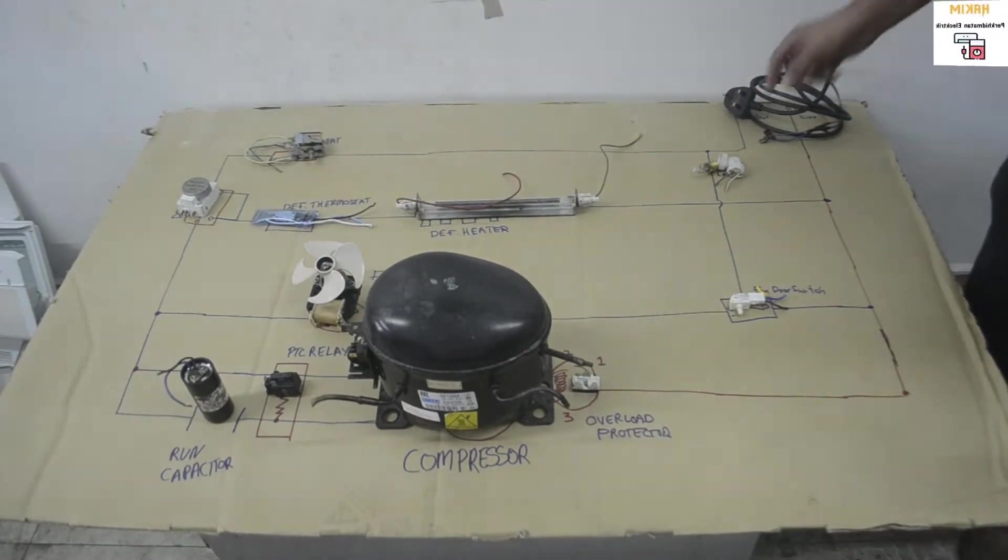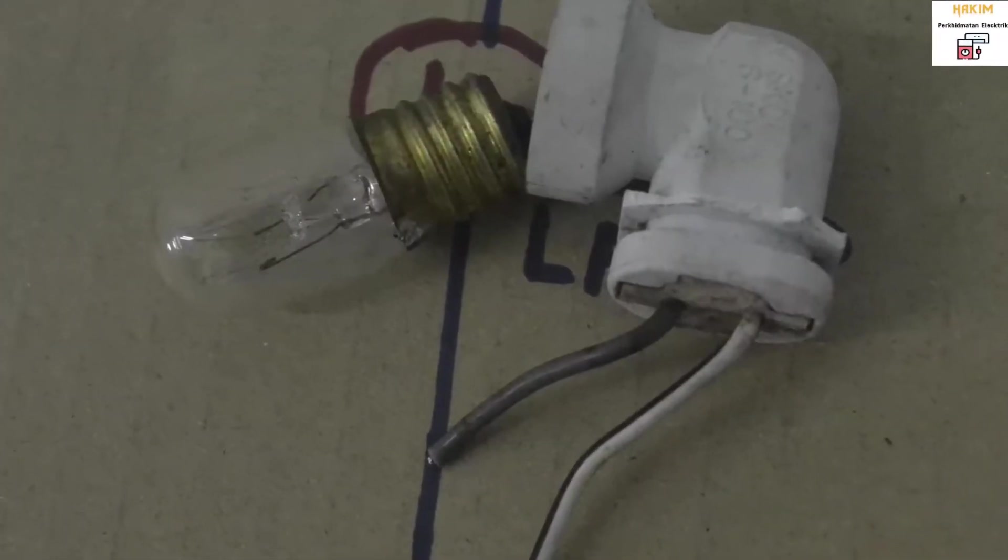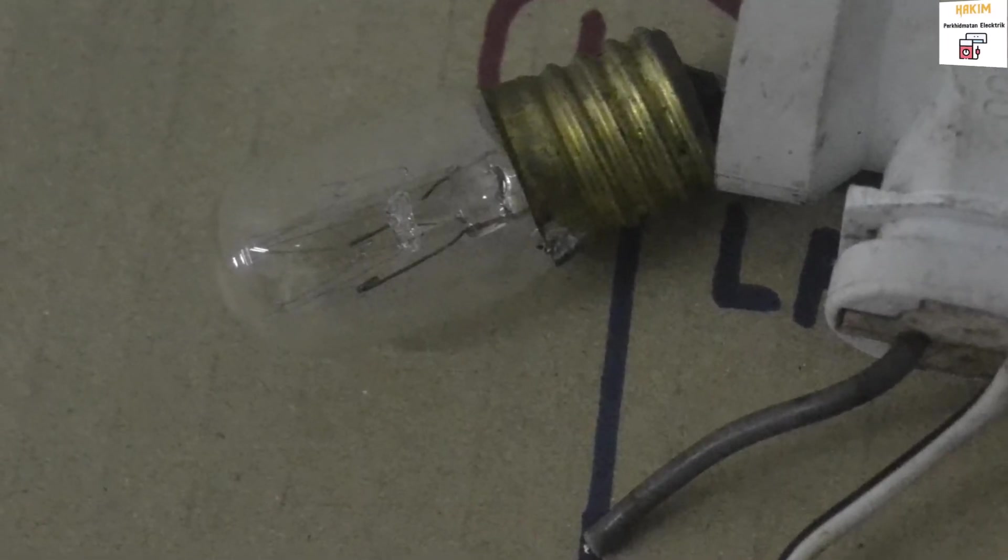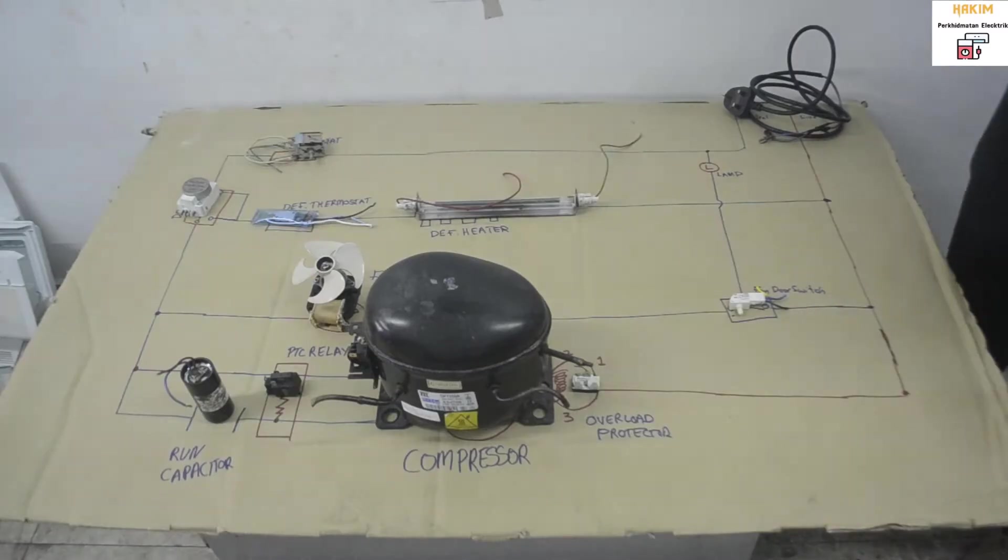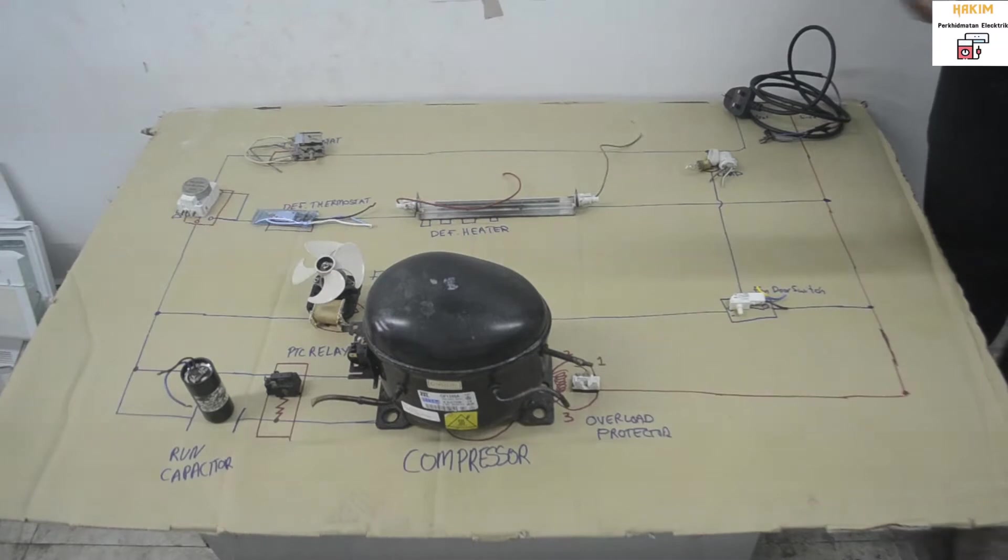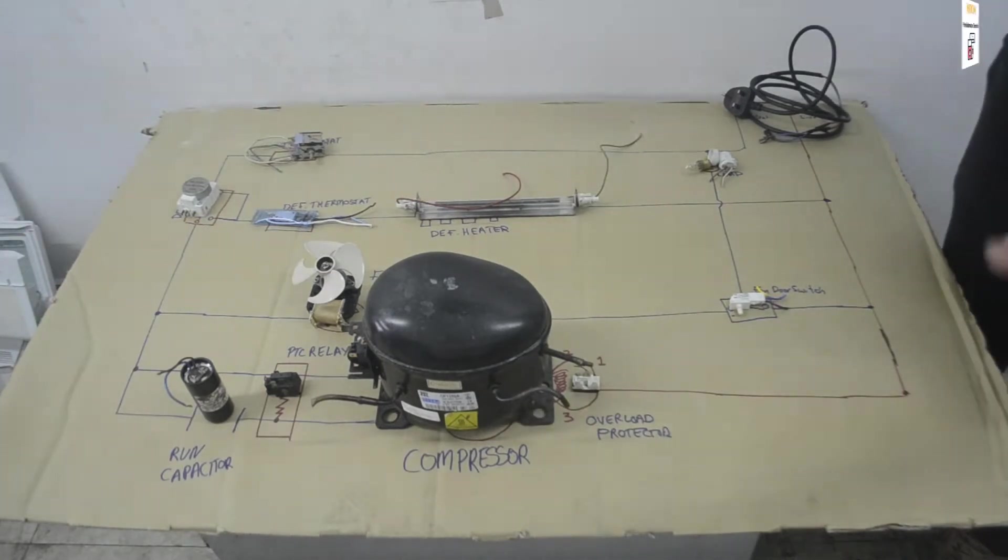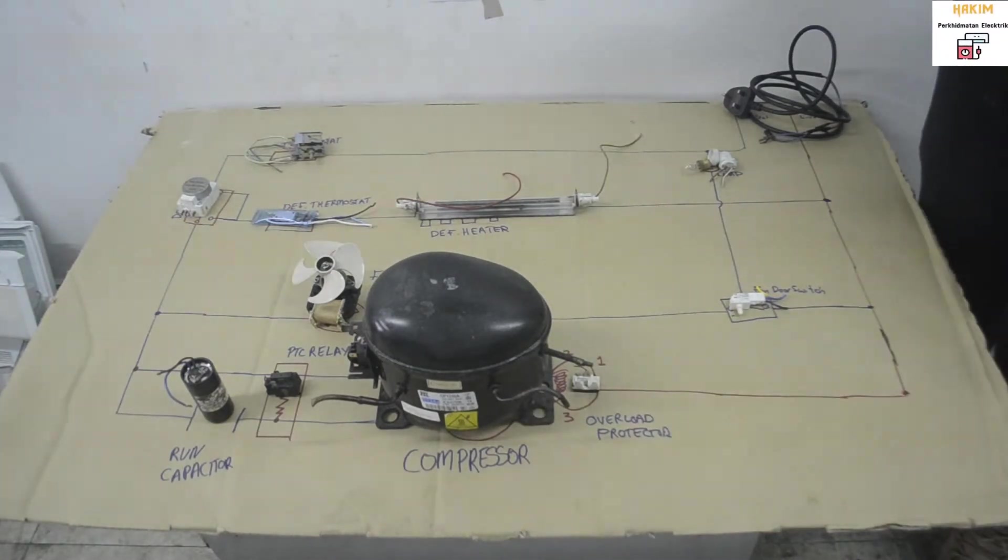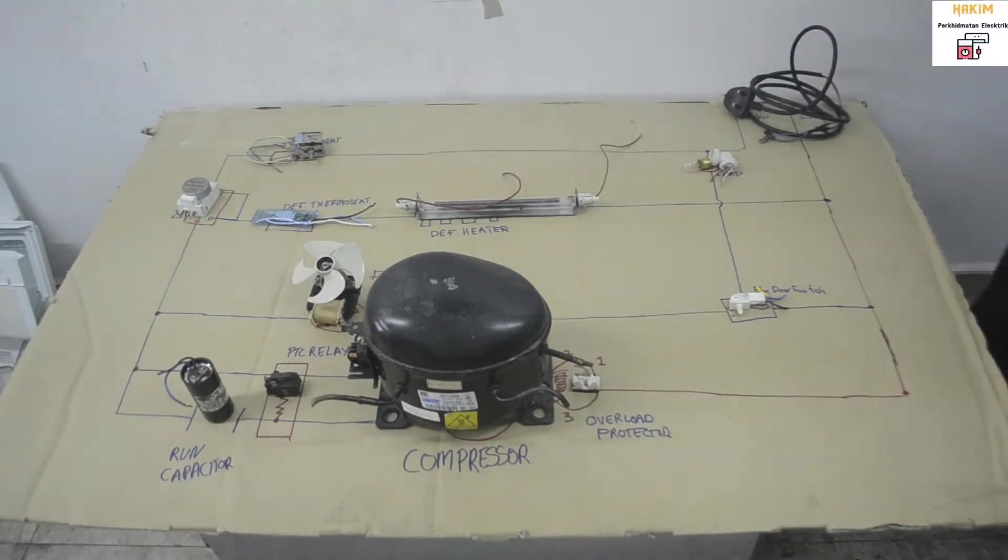From that, the lamp in the refrigerator gets power. So whenever you see the fridge is not working, the compressor is broken down, but the lamp would always be running. The only time it will not run is when the lamp itself gets damaged. The whole refrigerator will stop working, but the lamp gets direct supply from the socket.